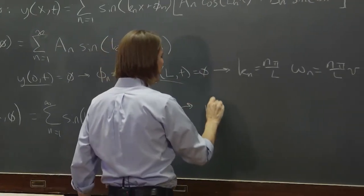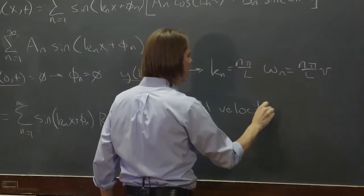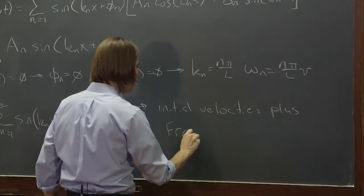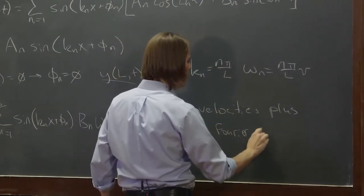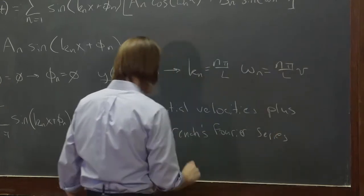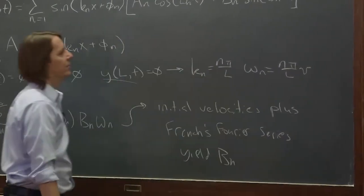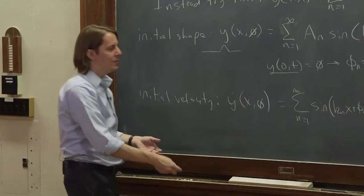So the initial velocities plus Fourier's method yield the b_n's. So to give you an idea of what this would look like, thinking about the initial velocities,